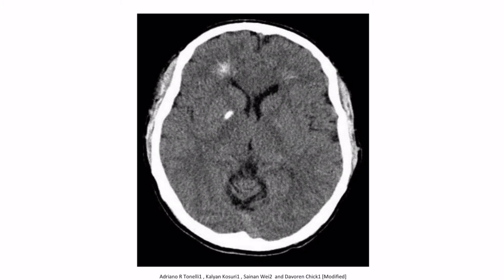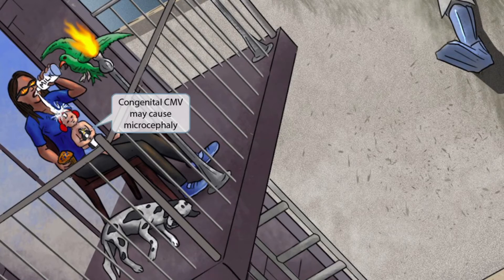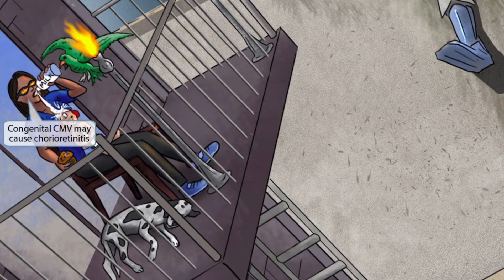This is a CT of the brain showing periventricular calcifications. You can see the ventricles, and the enhancing lesions around that area are the periventricular calcifications. The baby is also holding a penguin — our symbol for microcephaly, because penguins have small heads. So congenital CMV may cause microcephaly. Finally, the mother is wearing sunglasses reflecting the fire from the torch, which helps you remember that congenital CMV may cause chorio-retinitis.